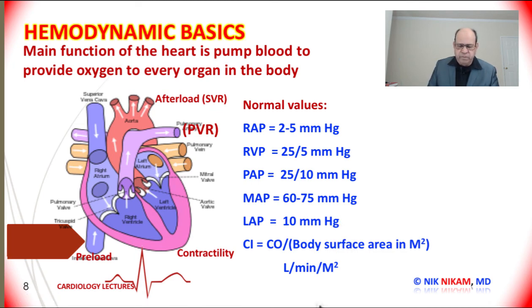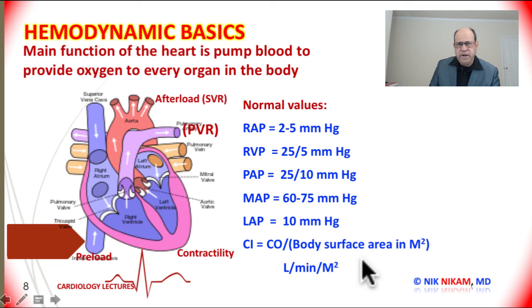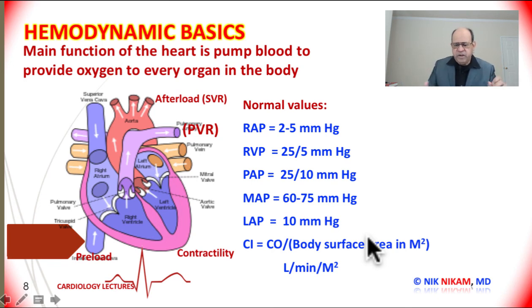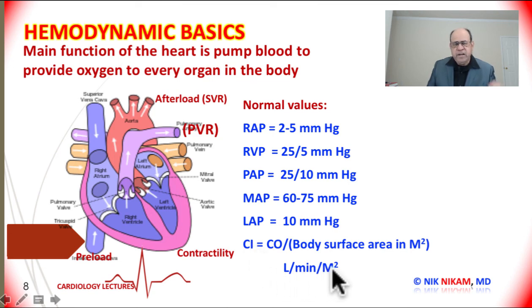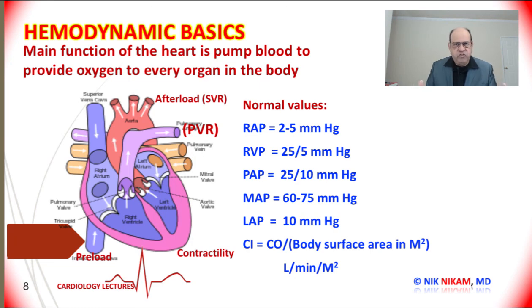In addition to cardiac output, we express the cardiac index, which is a better indicator of how the heart is functioning based on body surface area of a given individual. Comparing a person who weighs 100 pounds to one who weighs 300 to 400 pounds, we need a number reflective of the patient's overall physique. So we use cardiac index, which is cardiac output divided by body surface area expressed in square meters (M²). The cardiac index is expressed as liters per minute per meter squared — a more practical way of expressing cardiac output based on body size and habitus.